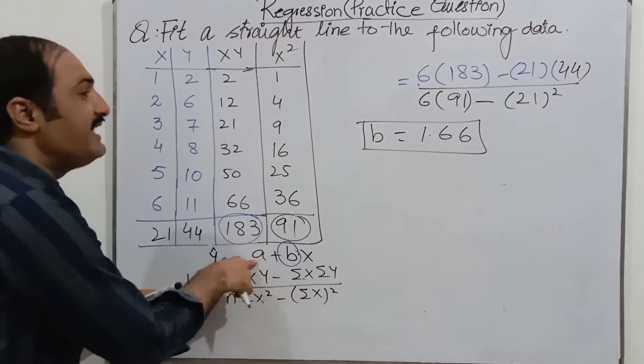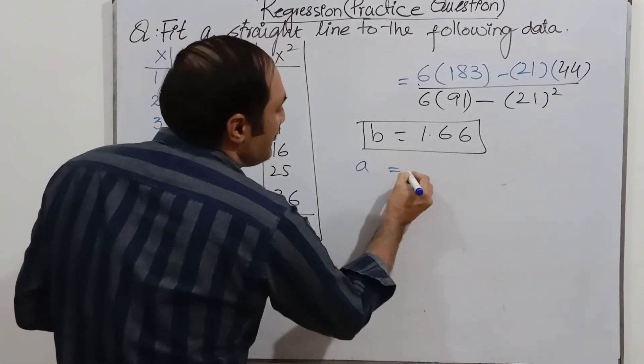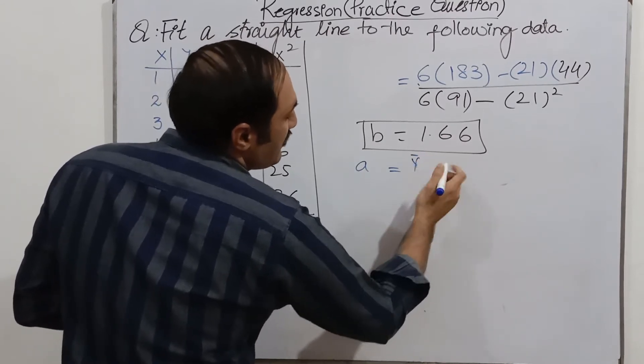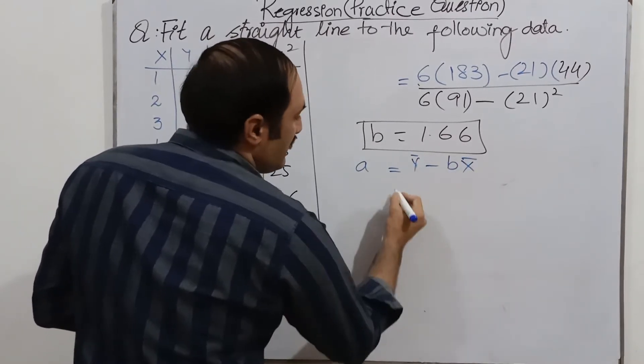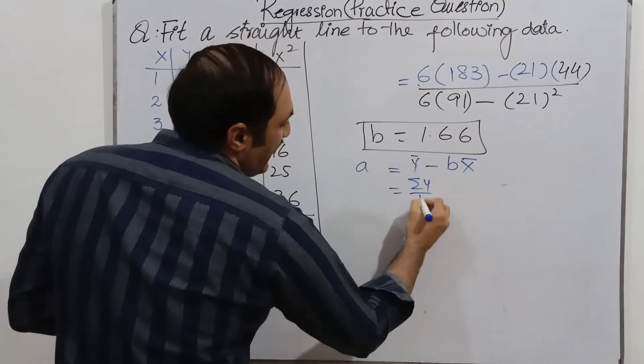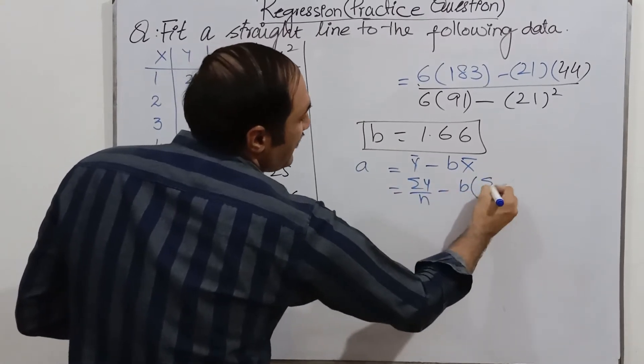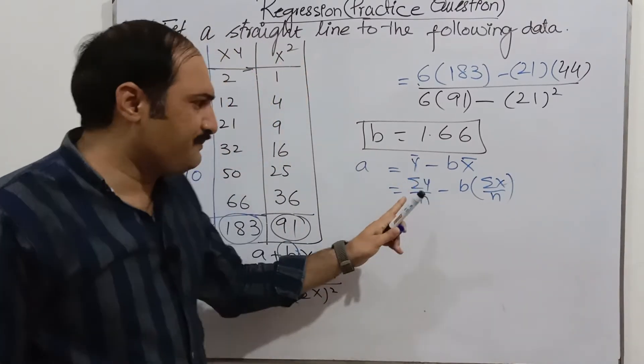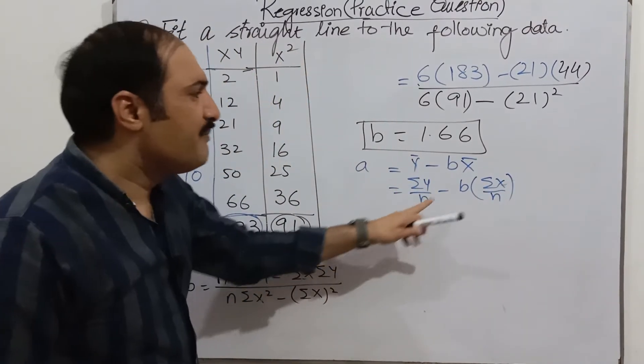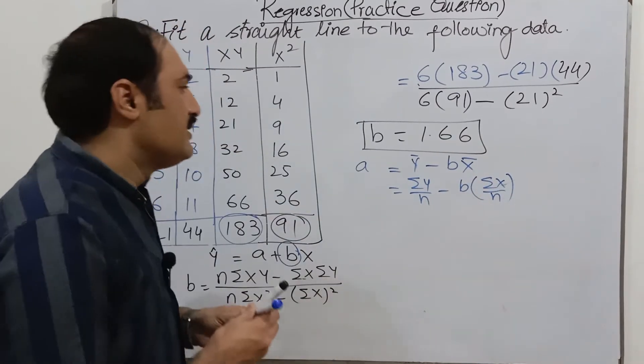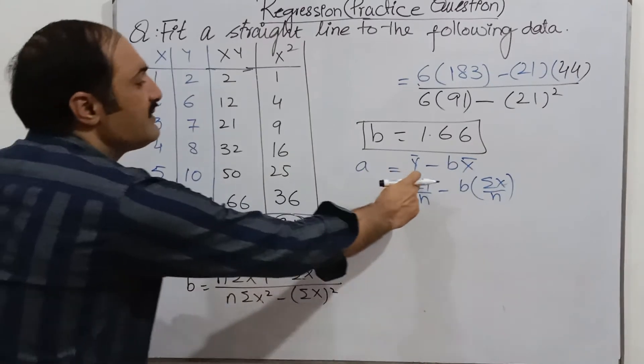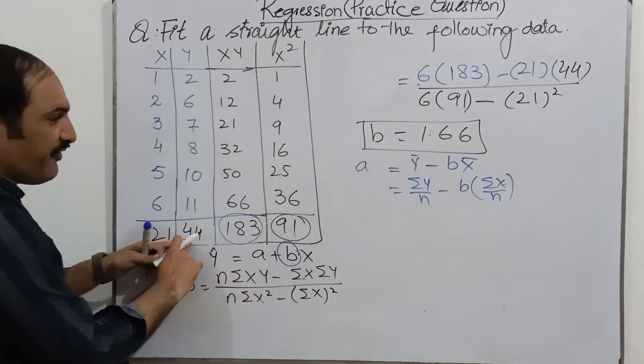Now we will find, we have already found B by using this formula, now we find intercept a. Intercept is equal to Y bar minus B X bar. Y bar is summation Y over N minus B into summation X over N. Its mean, mean of Y is summation Y over N, mean of X is summation X over N. So here is summation Y, summation means sum of Y is 44